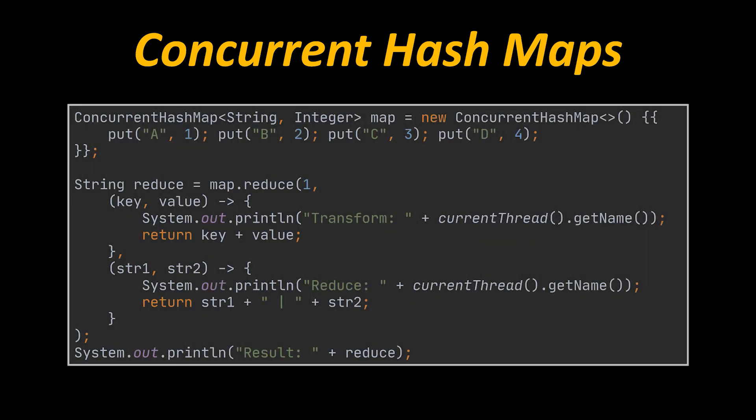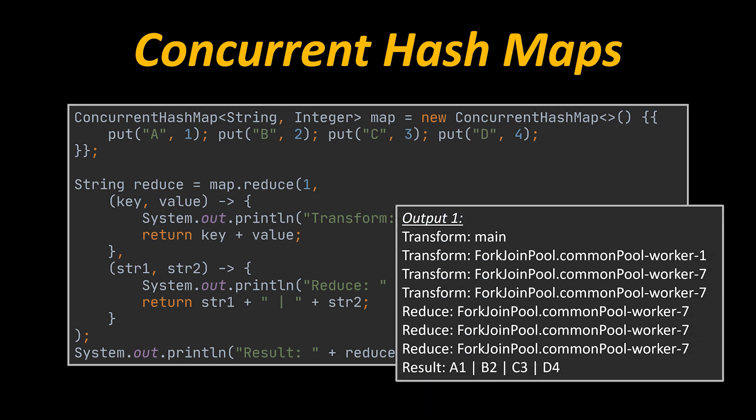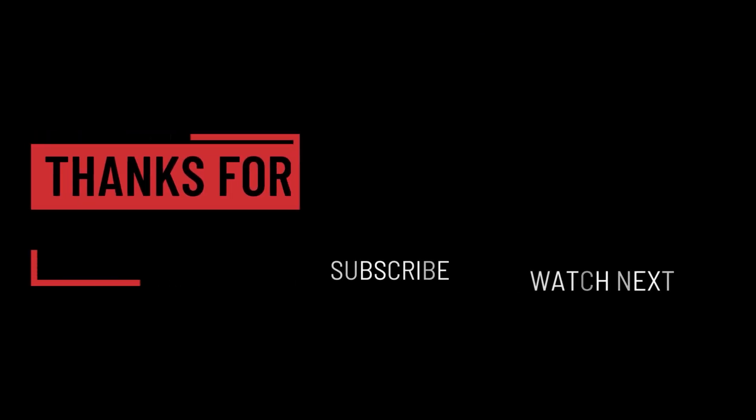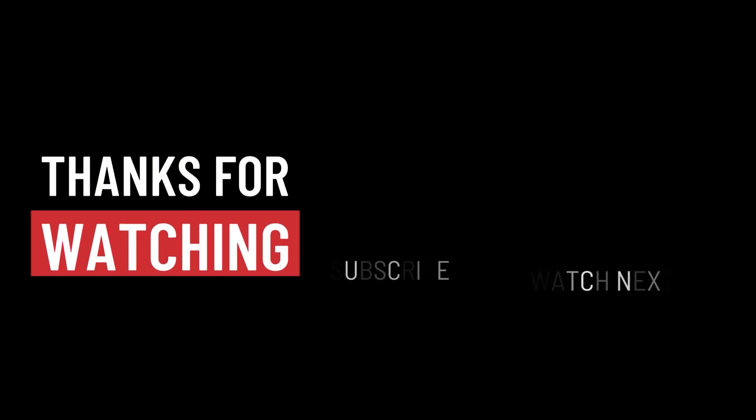Finally, the reduce method, already known from Java 8 streams, accepts two functional interfaces of type BiFunction. The first function transforms each key-value pair into a single value of any type; the second combines all those transformed values into a single result while ignoring any null values. The threads handling the transform and reduce operations may differ across runs, but the final output result will always be the same. That's it for this video — thanks for watching, take care, and see you in the next one.